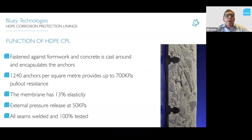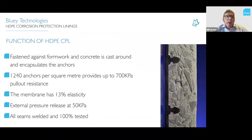How does the HDPE function? The liner is fastened to formwork on the flat side and concrete is cast to encapsulate around the anchors. With 1,240 anchors per square meter, this gives a 700 kPa pullout resistance. The membrane has 13% elasticity — the flat section between anchors can stretch, allowing transmission of moisture and pressure behind the lining, alleviating pullout from external groundwater overpressure. The membrane has been tested to release from concrete at around 50 kPa, which is quite a low pressure.